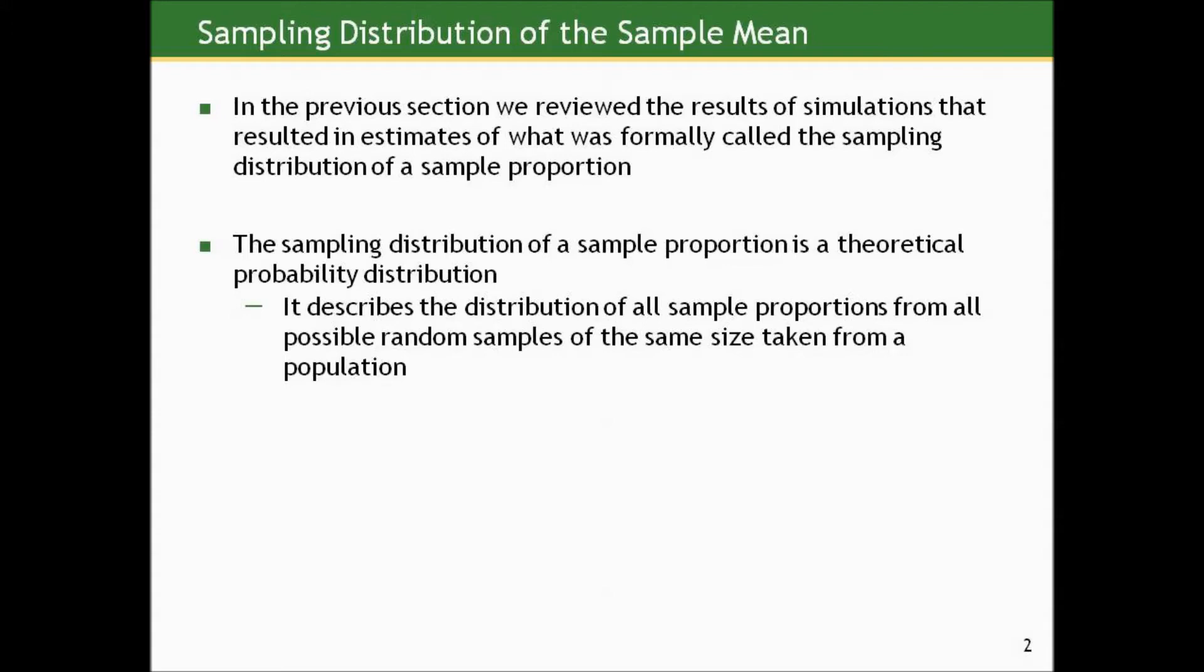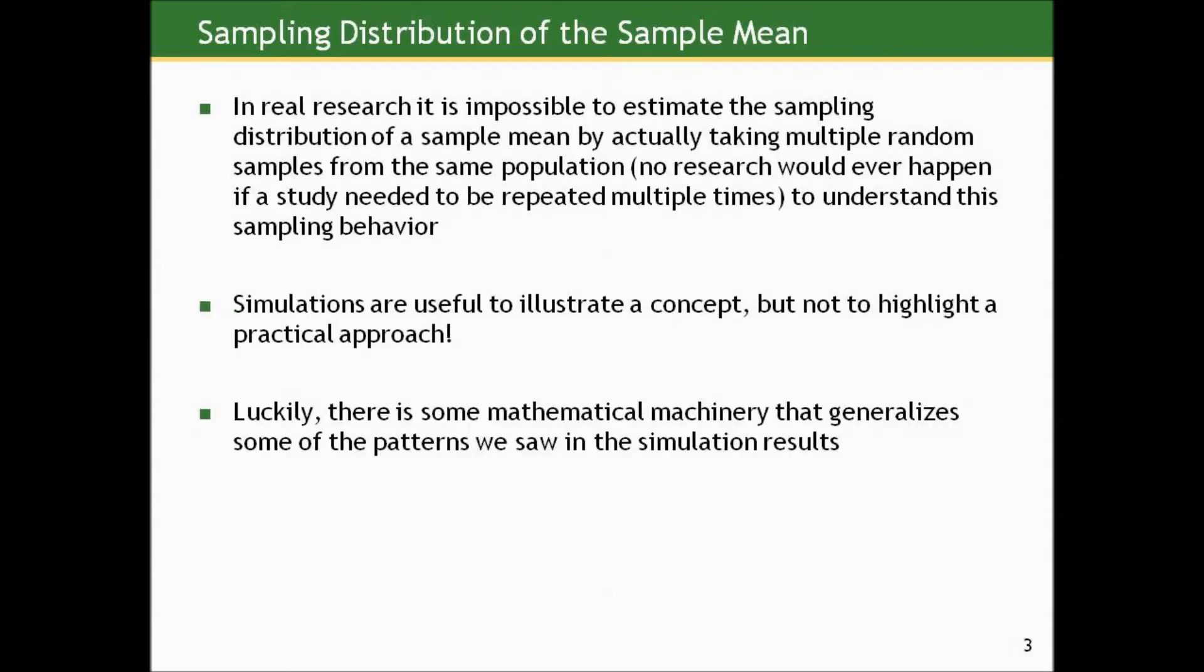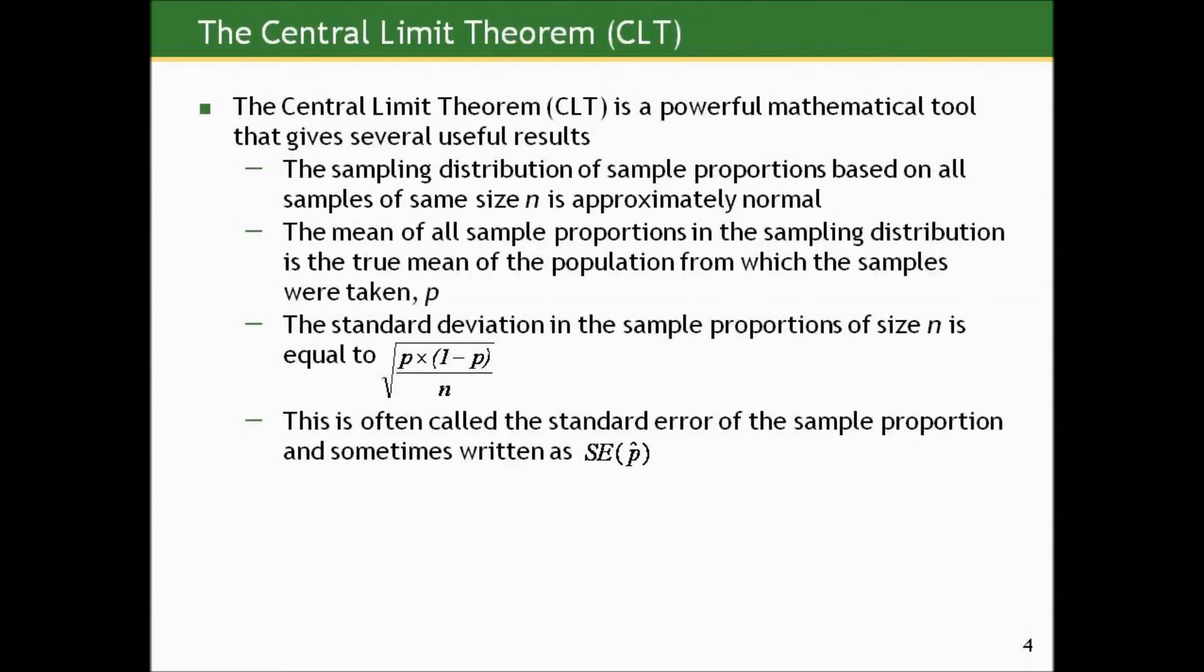But luckily, the central limit theorem plays a role with binary outcomes as well. The central limit theorem has already proven itself as a powerful mathematical tool, but will add to its usefulness here. It gives a couple useful results about proportions. The central limit theorem tells us that the sampling distribution of sample proportions based on all samples of the same size n will be approximately normal.